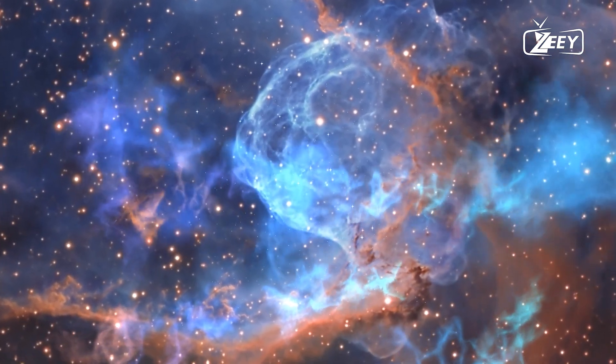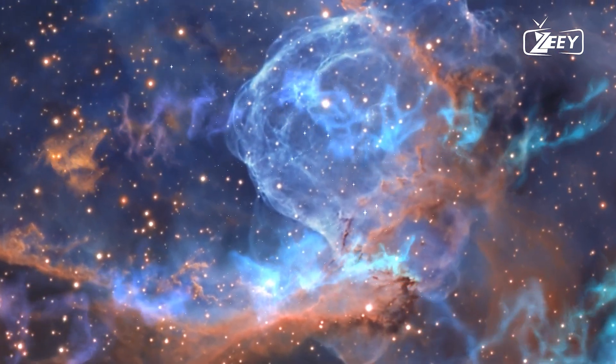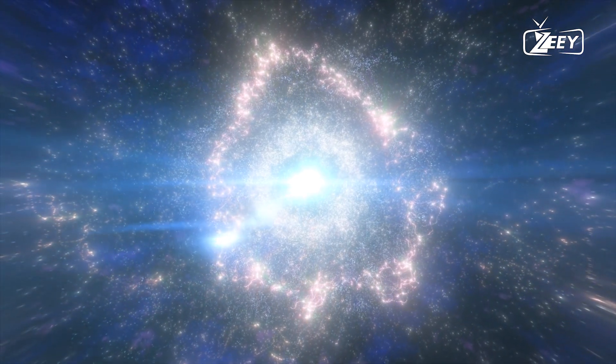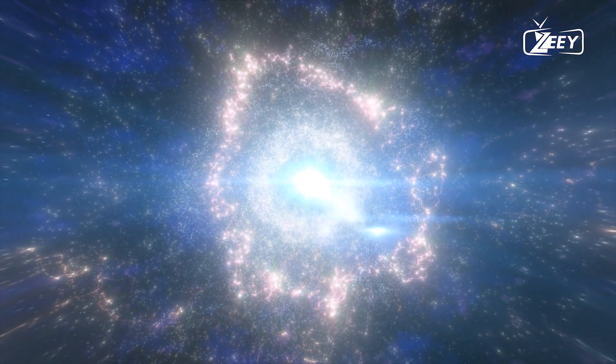Initially, Shapley believed everything visible was part of the Milky Way, a view Hubble's research disproved. By the early 1920s, Shapley corrected his view and cataloged galaxies, documenting 1,249 in six years.